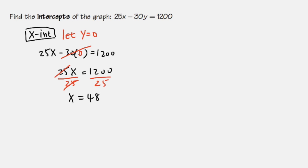And to answer the question, for the x intercept, remember it's a point. The x value is 48, y value is 0. So the x intercept right here will be the point 48, 0.